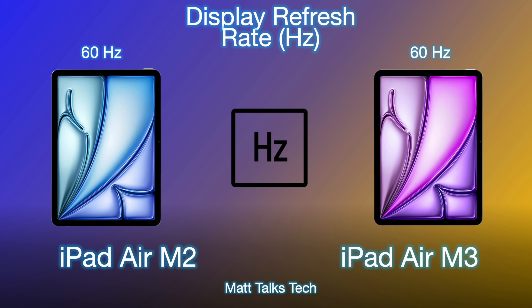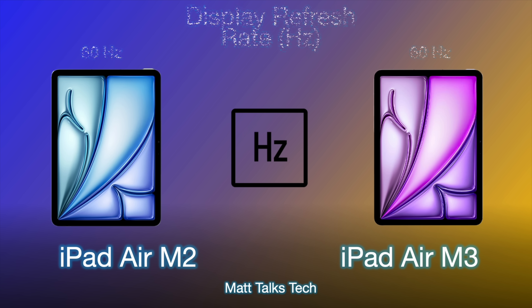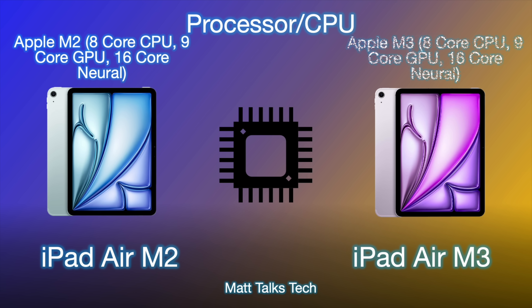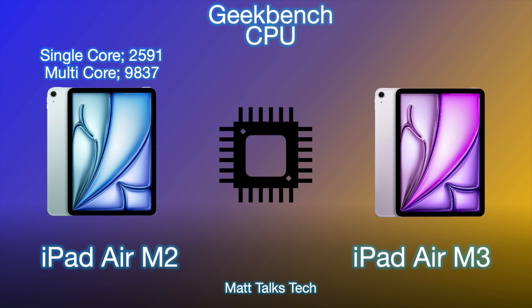ProMotion is exclusive to the iPad Pro at the moment. This is where the big changes start to happen — the processor. With the iPad M2 we got an eight-core CPU set up with four efficiency cores and four performance cores, a nine-core GPU, and a 16-core Neural Engine. The iPad M3 has the exact same setup: four efficiency cores and four performance cores making up the eight-core CPU, the nine-core GPU, and the 16-core Neural Engine. But obviously that next generation chip makes the difference.